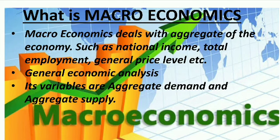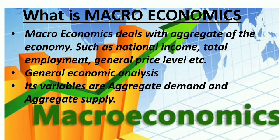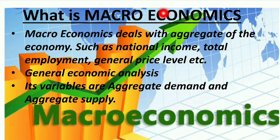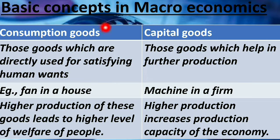First, macroeconomics deals with aggregates of the economy, and here we study concepts like national income. There is general economic analysis — that is mutual interdependence between all the factors. For example, if production increases, income will also increase, which in turn will lead to a rise in expenditure. The variables or instruments of macroeconomics are aggregate demand and aggregate supply. This question is often asked as a one-marker — what are the instruments or variables of macroeconomics?